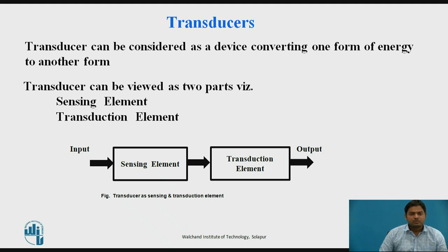A transducer can be divided into two sections: the sensing element and the transduction element. The sensing element senses the physical parameters, and the transduction element converts the measured physical quantity into the appropriate electrical quantity for an electrical transducer. Electrical transducers are widely used today because the electrical signal can be stored in memory by converting it into a digital signal.